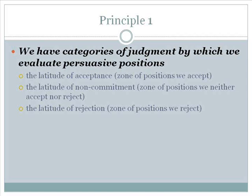Within the latitude of acceptance is contained all the positions on a particular topic that we will find acceptable. Within this latitude, there is one special position called the anchor position. This is the single position that a person finds the most acceptable of all. It may be the most extreme position, but the anchor could also be a milder position. At some border point, we no longer accept some position, but we don't reject it either — we are now in the latitude of non-commitment. As we move out of the latitude of non-commitment, we reach the second border and begin to enter the latitude of rejection, which contains the positions on an issue that we reject.